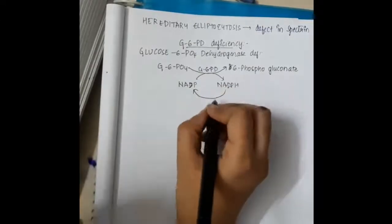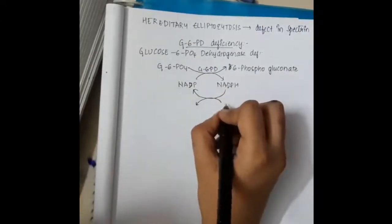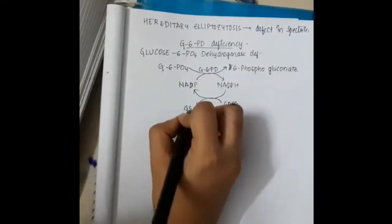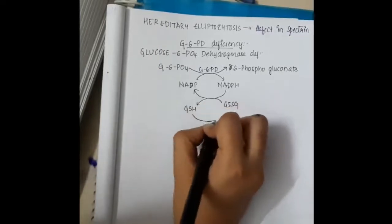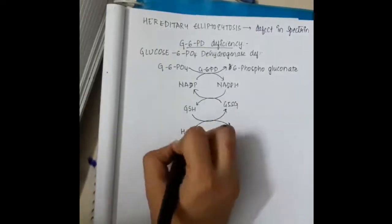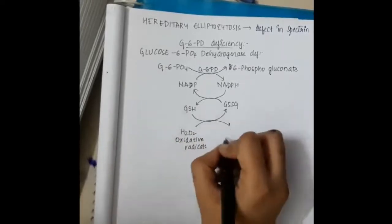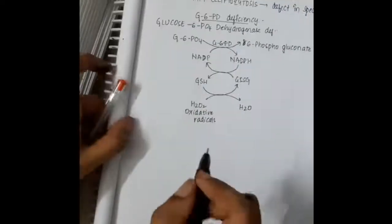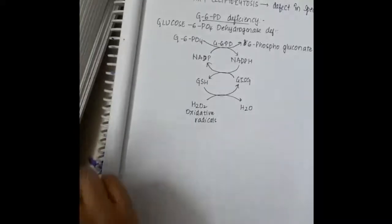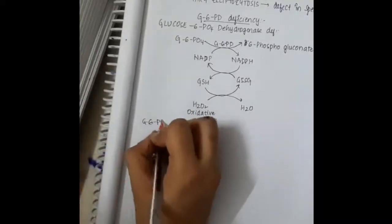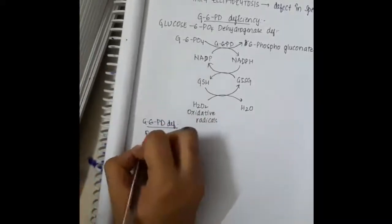This NADPH is converted back to NADP, thus restoring NADP. During this process, the hydrogen of NADPH is given to glutathione, forming reduced glutathione. This reduced glutathione gives its hydrogen to oxygen free radicals or oxidative radicals like H2O2, forming H2O.